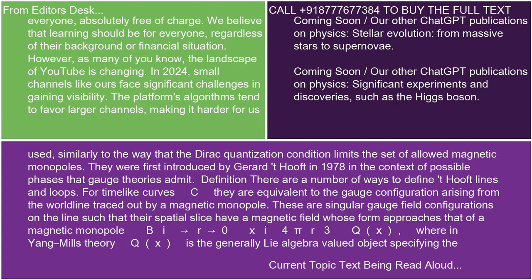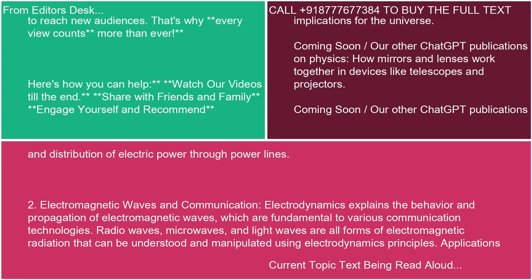1. Electrical Power Generation and Distribution. Electrodynamics principles are crucial in the generation of electric power in power plants. Electrical generators operate based on electromagnetic induction, where mechanical energy is converted into electrical energy by moving a conductor through a magnetic field. Electrodynamics also governs the transmission and distribution of electric power through power lines.